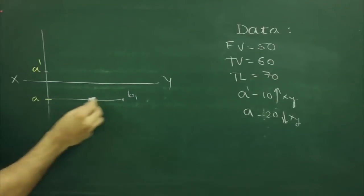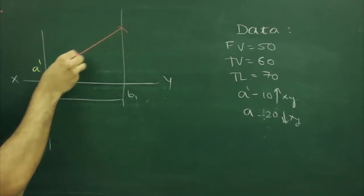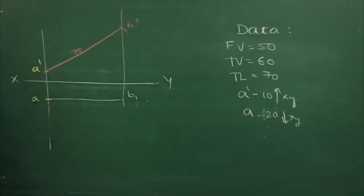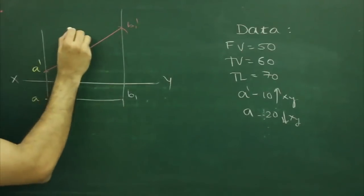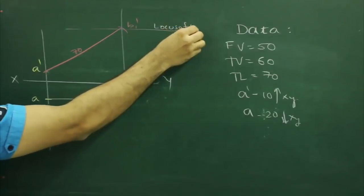And we will project this straight, and from a dash, we will cut true length, that is 70, b1 dash. So we will get the locus of b dash.